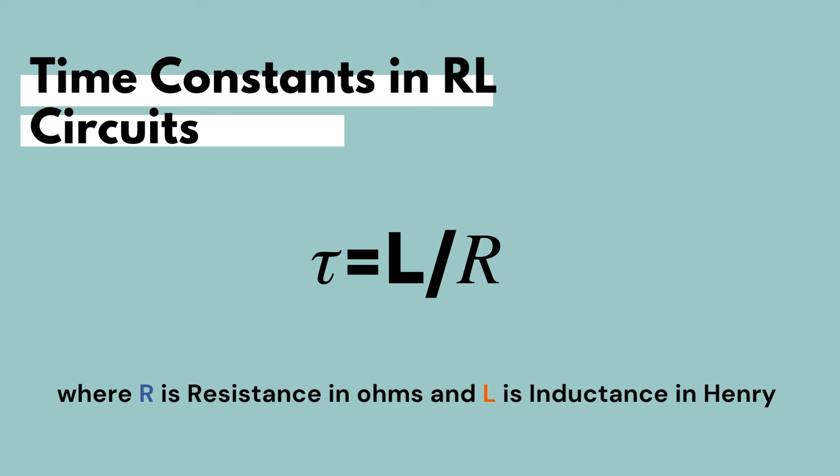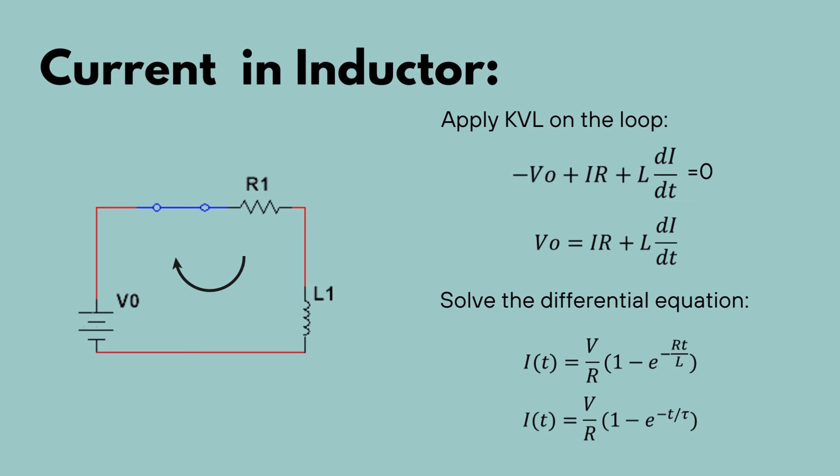But how can we mathematically describe this behavior in the change of current? We can apply Kirchhoff's voltage law onto the loop, where KVL will yield the following equation: V₀, which is the supply voltage, equals I·R plus L·dI/dt. By solving this differential equation, we get the following equation to describe the behavior of current in a charging series RL circuit, where I is equal to V/R · (1 − e^(−t/τ)), where t is the time and τ is the time constant L/R.